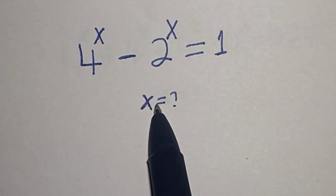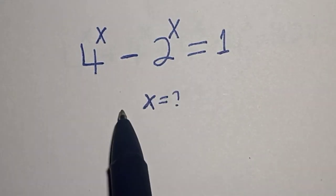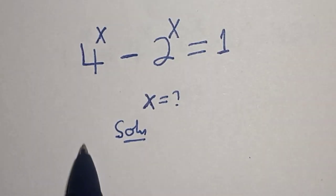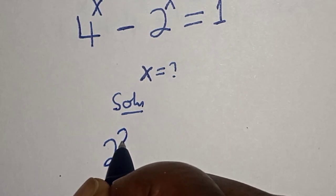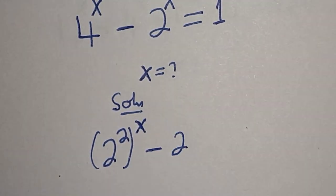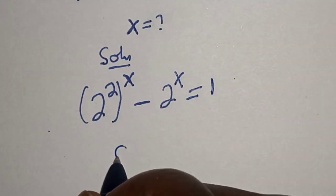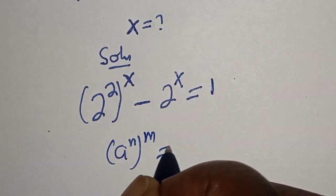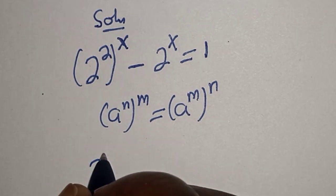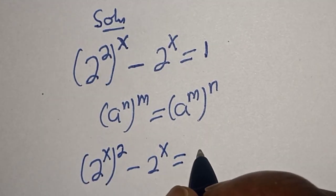Hello, welcome to Magis. In this class we want to find the value of x from the equation 4 to the power of x minus 2 to the power of x is equal to 1. We can rewrite 4 to the power of x as 2 raised to the power 2, raised to the power x, minus 2 raised to the power x is equal to 1. Take note of the rule that a raised to power n raised to power m equals a raised to power m times n. So we have 2 raised to power 2x minus 2 raised to power x is equal to 1.